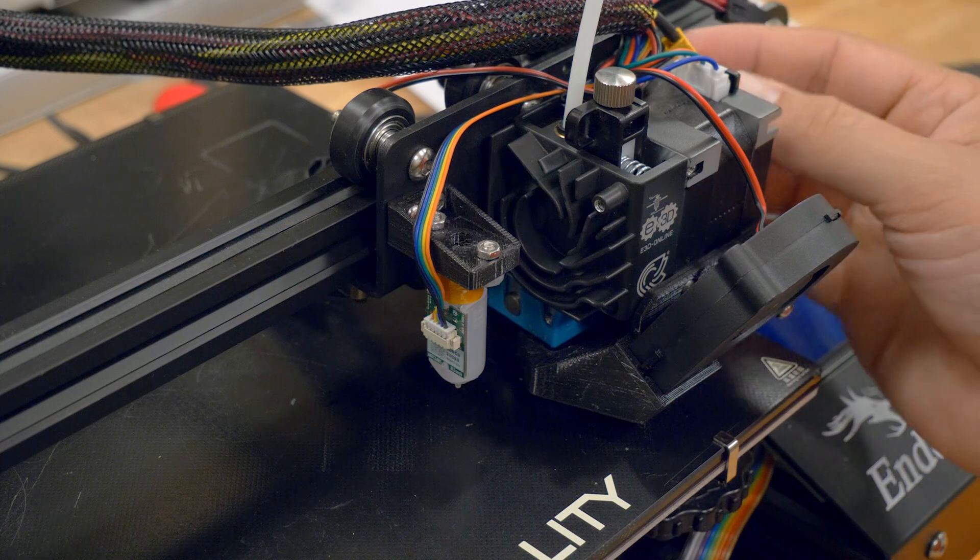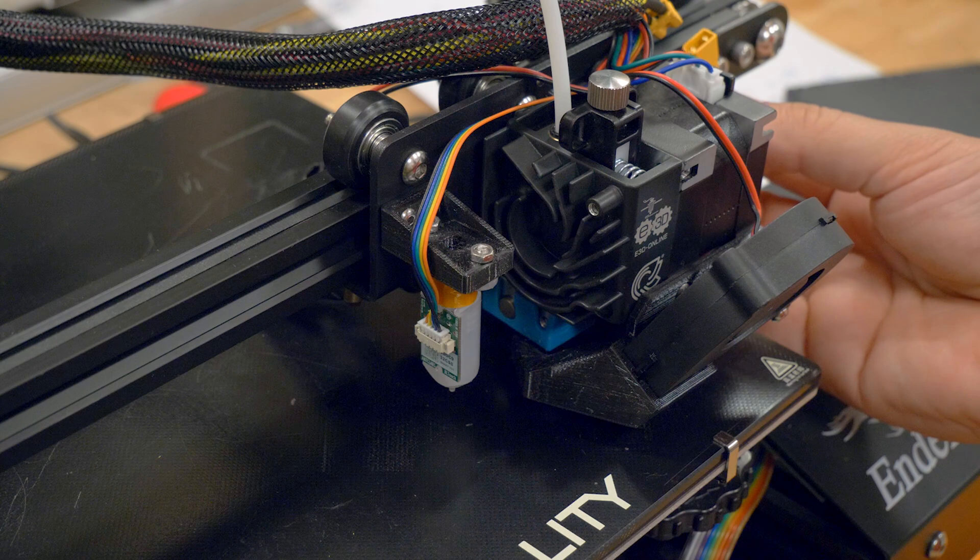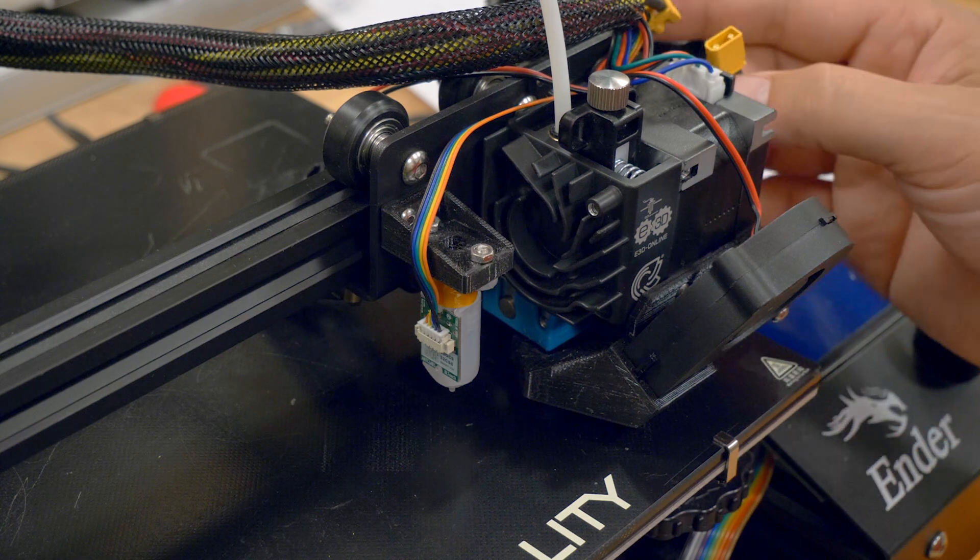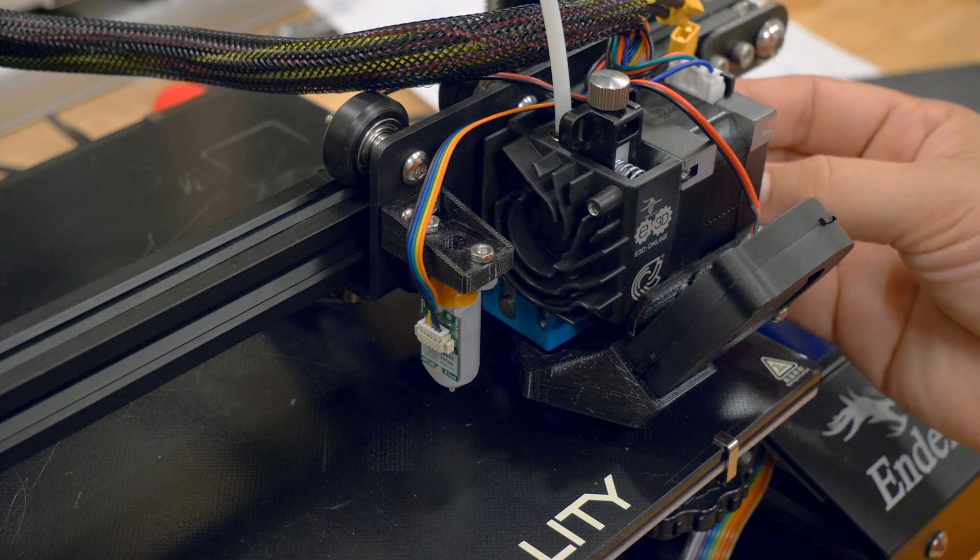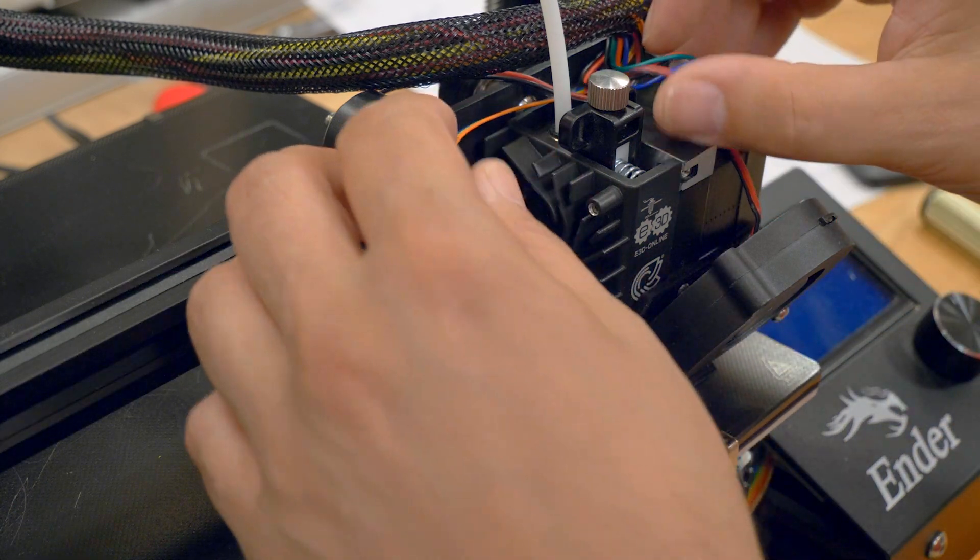Now, at this point, if you have the ability to disconnect your hot end and your temperature sensor, you should do it. You can see right here, I've installed an XT30 connector on my heater cartridge. And the Hemera temperature sensor comes with a disconnectable connector. That's going to make the next step a little easier.